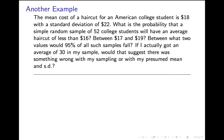Let's do another example. Haircuts of American college students cost, on average, $18, with a standard deviation of $22. What's the probability that a simple random sample of 52 college students will have an average haircut of less than $16? How about between $17 and $19? Between what two values would 95% of all such samples fall? And finally, if I actually got an average of 30 in my sample, would that suggest there was something wrong with my sampling, or with my presumed mean or standard deviation.